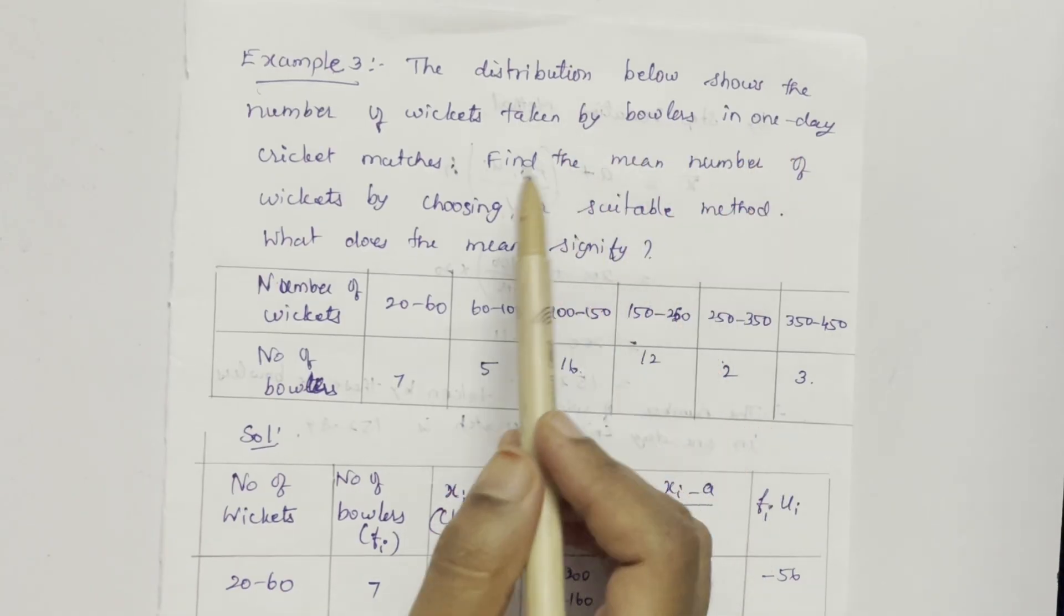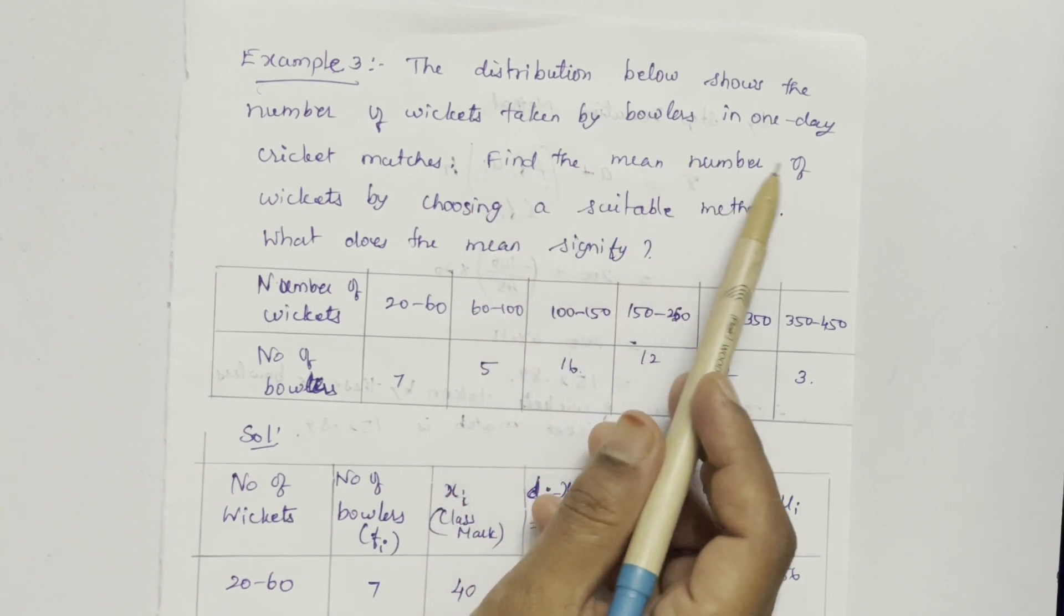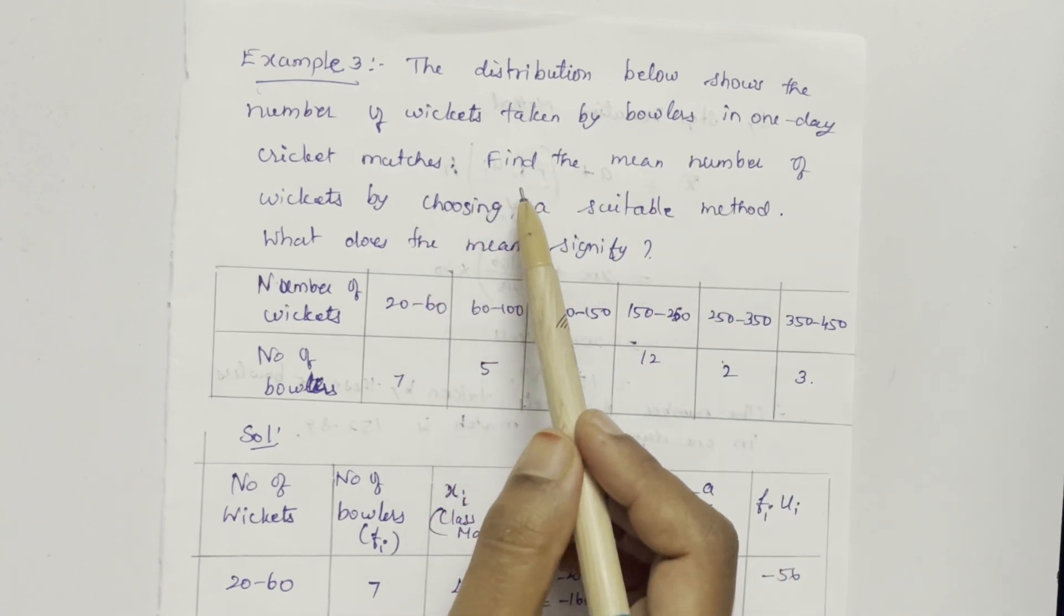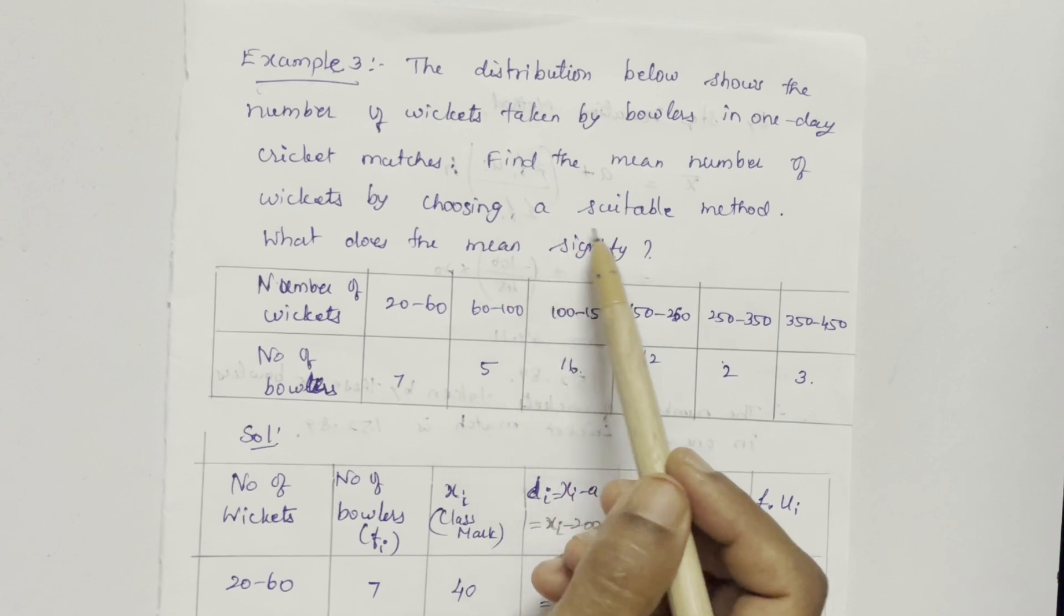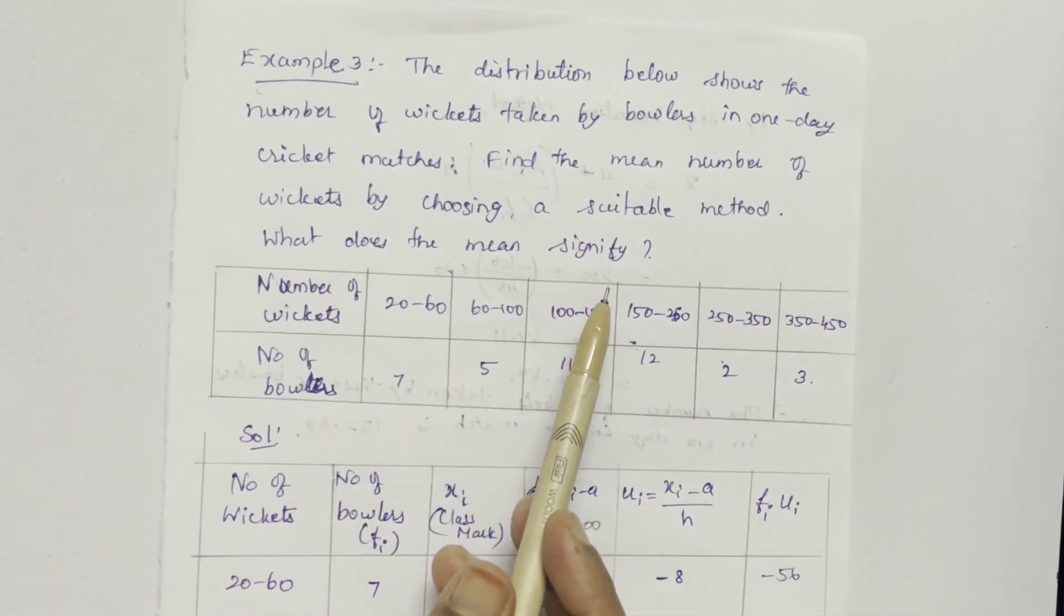The distribution below shows the number of wickets taken by bowlers in one day cricket matches. Find the mean number of wickets by choosing a suitable method. What does the mean signify?